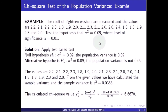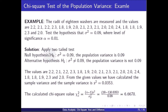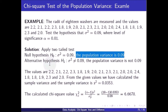In another example, the radii of 8 washers are measured and the values are 2.2, 2.1, 2.2, 2.3, and so on. We test the hypothesis that sigma square equals 0.09, meaning the variance is 0.09, at a significance level alpha equal to 0.01. We apply the two-tail test. The null hypothesis is sigma square equals 0.09 and the alternative hypothesis is sigma square not equal to 0.09.